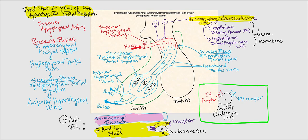Blood enters this hypophysioportal system at the superior hypophysial artery, which is a branch of the internal carotid artery. From there, blood flows into the primary plexus of the hypophysioportal system, which is a capillary bed — the site of exchange. Then blood flows into the hypophysioportal veins, and we have two of them, leading into the secondary plexus of the hypophysioportal system, which is another capillary bed and again the site of exchange.